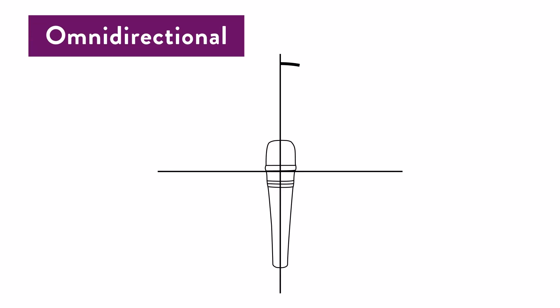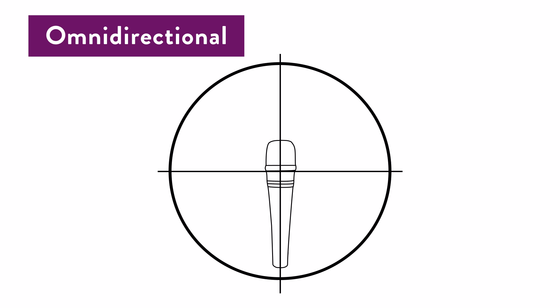Omni-directional polar patterns pick up audio all around the microphone very evenly. You typically see these used for in-the-field journalism. They are ideal for this application because they can be pointed at an audio source without much attention being paid to exact mic placement. These are not great if you will be recording at a desk — they will pick up every paper shuffle or keyboard click. If you are using a lapel mic, it is most likely an omnidirectional mic. If you have ever used one of these mics, you will know that it is not good for recording more than one person for a podcast because you are just going to end up with a lot of noise in the mix.